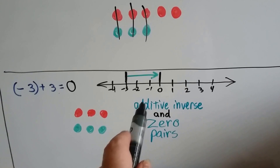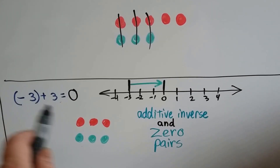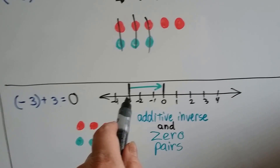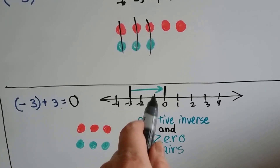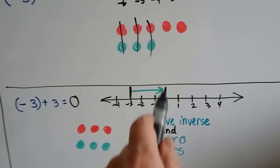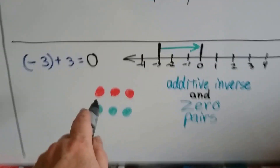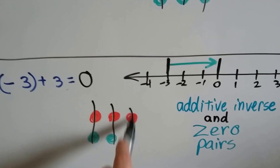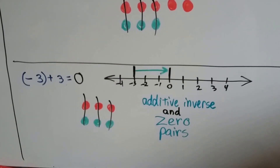This is the additive inverse and zero pairs. We're at negative 3 on the number line — down here to the left of zero — and we're going to add 3: 1, 2, 3. That makes us back at zero. The negative and positive chips cancel each other out, so we're back at zero. That's the additive inverse.